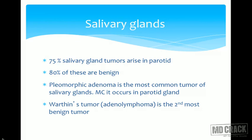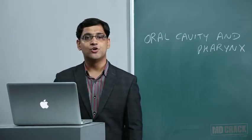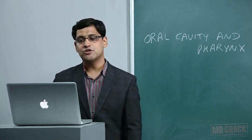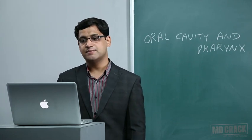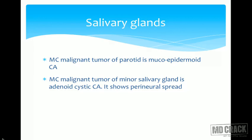The second most common benign tumor is Warthin's tumor, also known as adenolymphoma. The most common malignant tumor of the parotid is mucoepidermoid carcinoma. The most common malignant tumor of minor salivary glands is adenoid cystic carcinoma, which shows perineural spread. Remember, parotid is a major salivary gland.